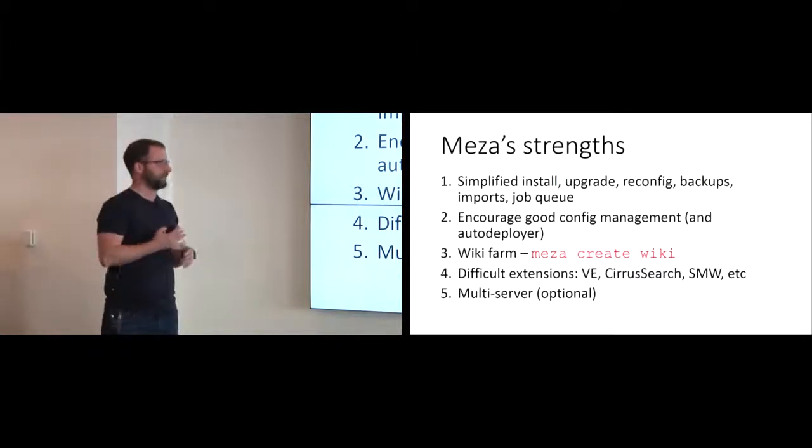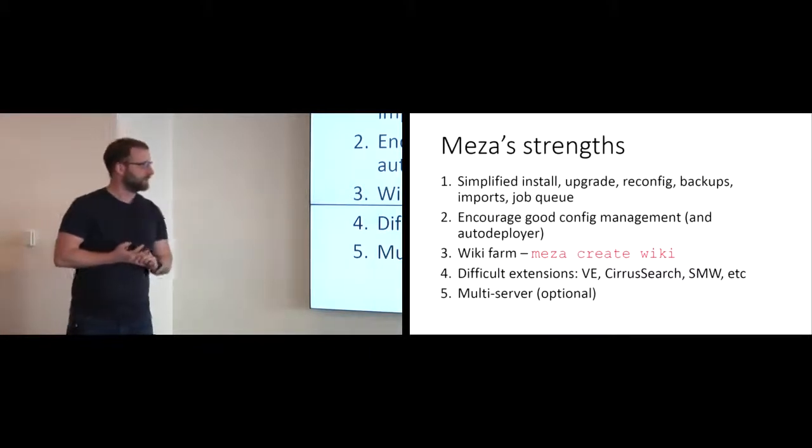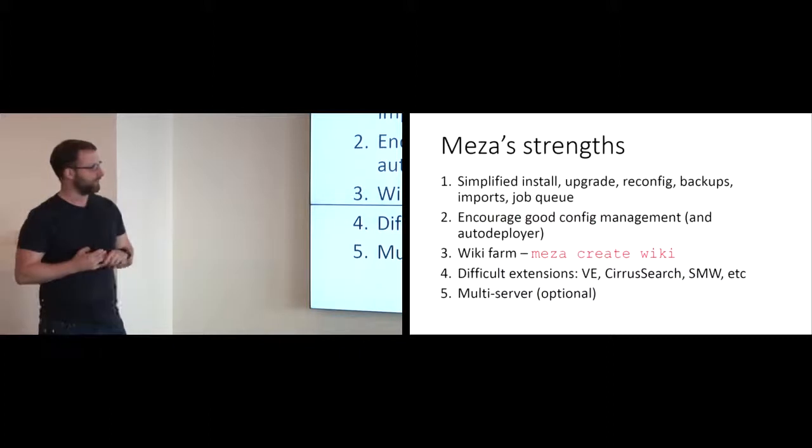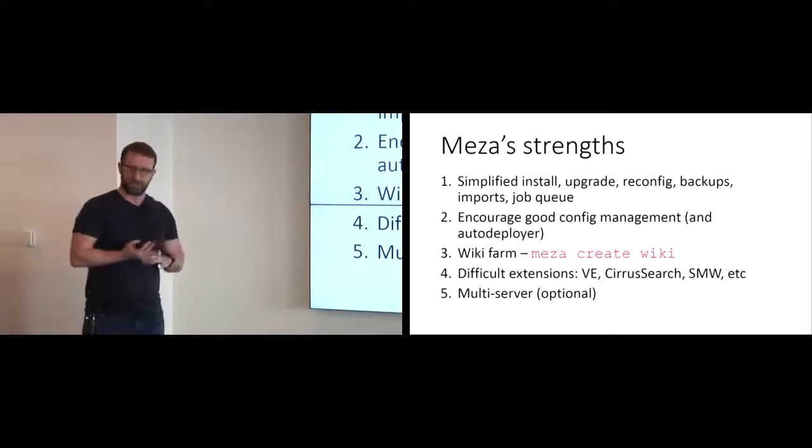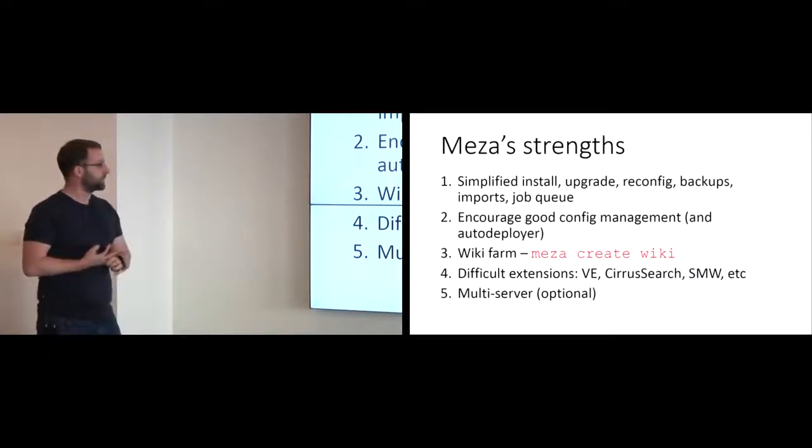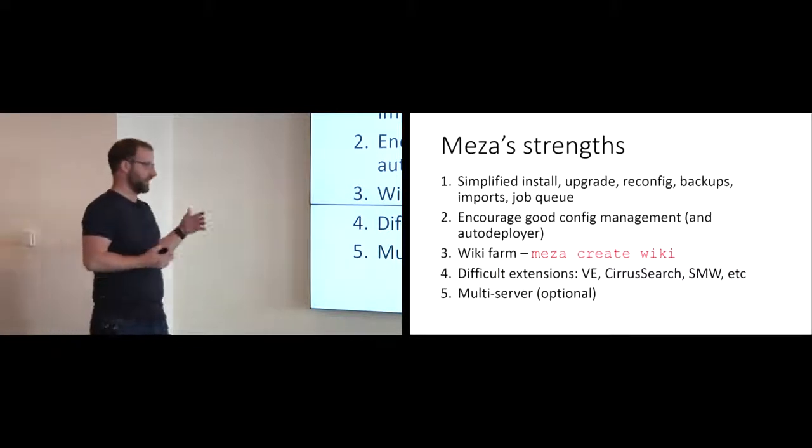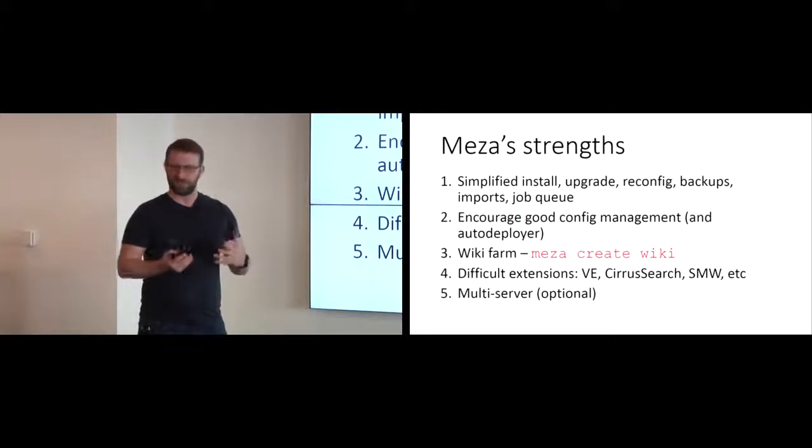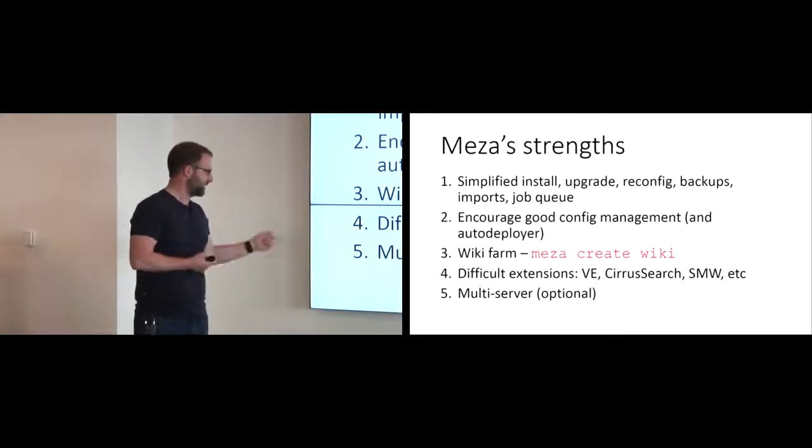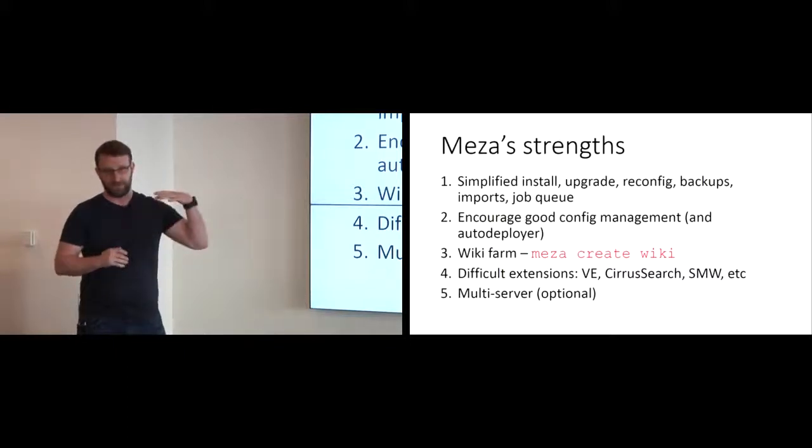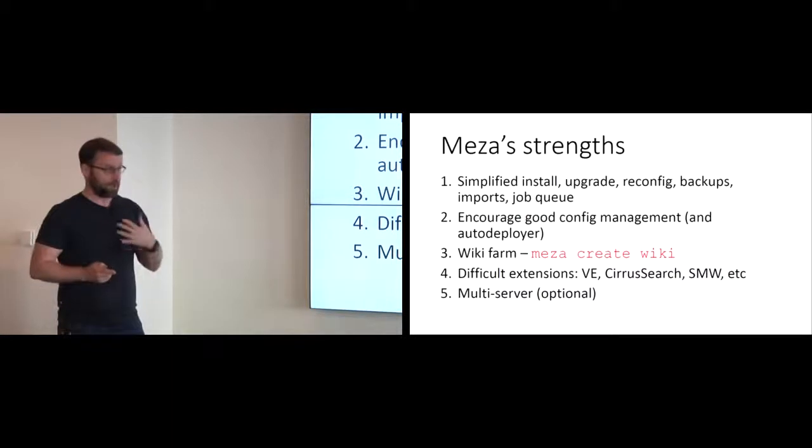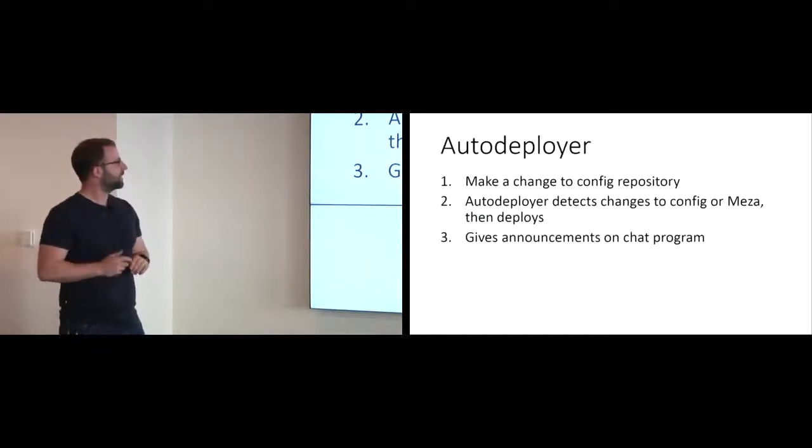Strengths, however, I already talked about install, upgrade, reconfig, backups, imports, job queue. I kind of hinted at the good config management. And I didn't say anything about Audit Polar, but I'll talk about that in a minute. A few other things, though. This does create a wiki farm, so it is easy to add wikis. Meza create wiki command does it. We've got lots of wikis that we're managing with it. It does install kind of the difficult extensions like Visual Editor and Cirrus Search. I added SMW in there, not because it's particularly hard to install, but it has issues with rebuilding data and such that happen, especially as you get to a larger wiki that can be kind of problematic, and it handles some of those large wiki aspects. The other thing is it does make it so you can use a multi-server setup. So if you define that I've got a database server or multiple database servers and multiple application servers, you can do all that. I think Greg is running that way on some things. I'm not doing that in production personally.